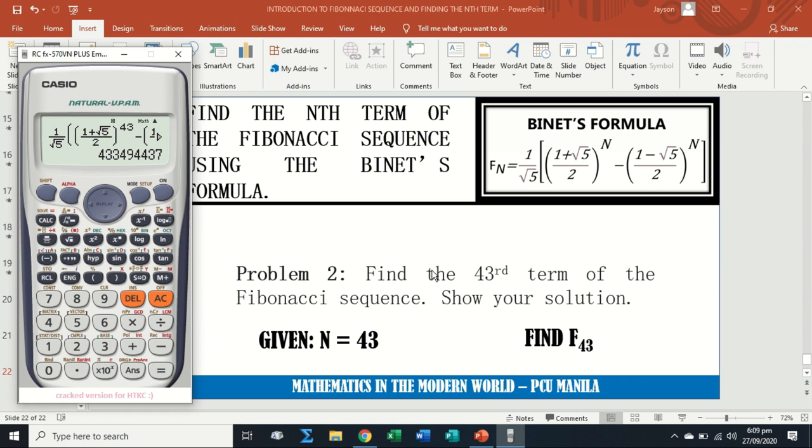This will now be our 43rd term: 433 million, 494 thousand, 437. This is basically the value of the 43rd term. Now, if your calculator is not capable of displaying this many numbers, it might show a syntax error or scientific notation. That's okay if it's in scientific notation because you can convert it to a whole number. But it's better to download calculators capable of displaying large numbers.